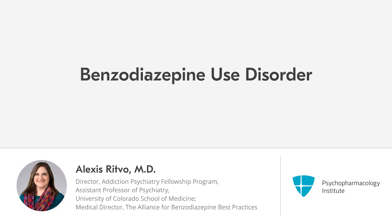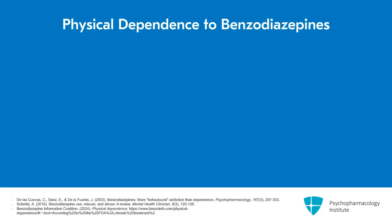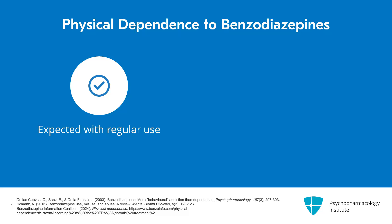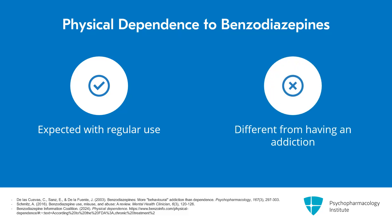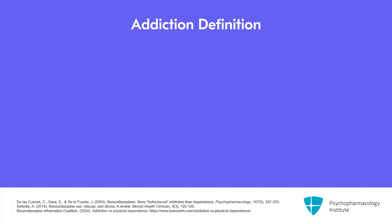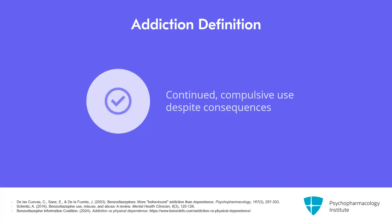In this video, I will focus further on benzodiazepine use disorder. While physical dependence — comprised of tolerance and withdrawal — is expected with regular prescription use, having physical dependence to benzodiazepines does not, in and of itself, qualify as having a use disorder or an addiction. You can summarize the definition of addiction, or a use disorder, as continued compulsive use despite consequences.